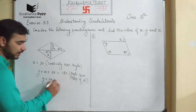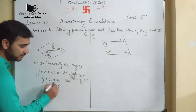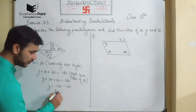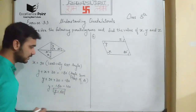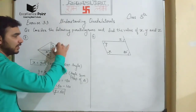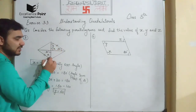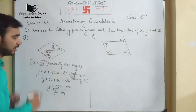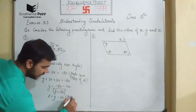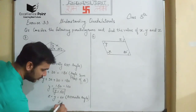Putting the value of X: Y plus 90 plus 30 should be equal to 180 degrees. Y is equal to 180 minus 120, so Y is equal to 60 degrees. Now for Z — these two sides are parallel because it is a parallelogram, and angle Z should be equal to angle Y because of alternate angles. So angle Z is equal to 60 degrees.